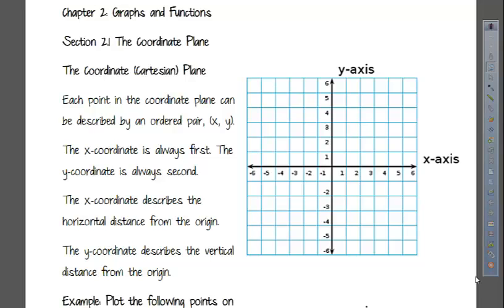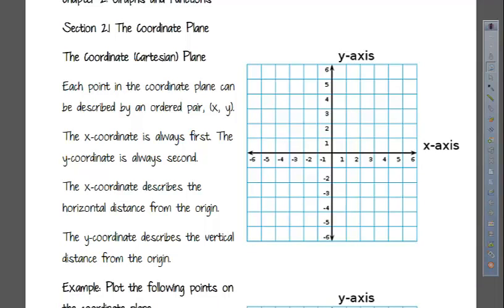So you know that we describe these points using an ordered pair, x, y. It's an ordered pair because the order in which the numbers are given to you does matter. X always comes first, and then the y-coordinate is always second. The x-coordinate describes how far we're going to go left or right from the origin, and the y-coordinate describes how far we go vertically from the origin. And so we can plot points in our Cartesian plane using the x and the y-coordinates.